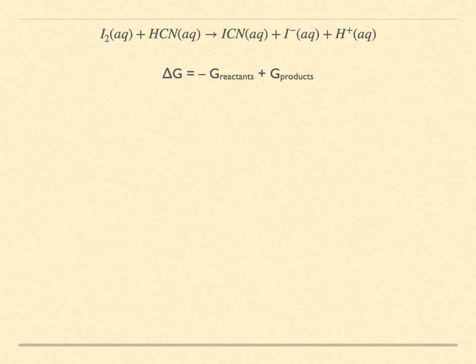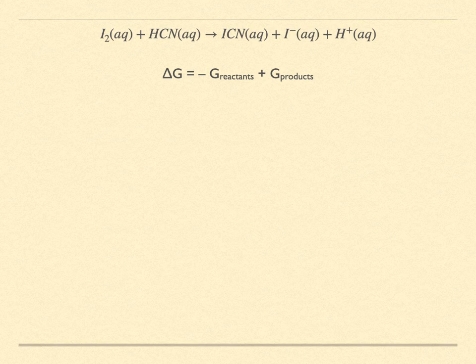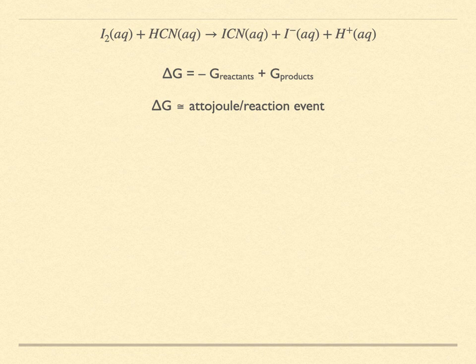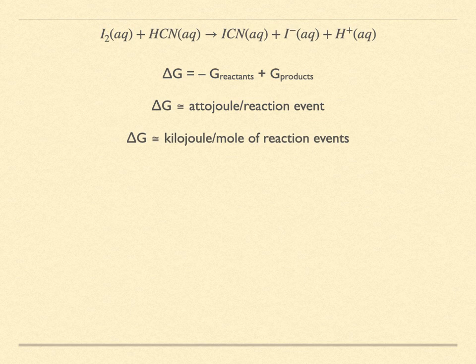If we restrict our conditions to constant temperature and pressure, then changes in chemical potential are just changes in Gibbs energy. When a reaction event occurs, there is a small change in Gibbs energy, delta G. For a single reaction event, this would be a very small number, probably measured in attojoules per event. On the other hand, if we consider a very large system, such that when a mole of reaction events occurs they do not substantially change the concentration, then we can think of the change in Gibbs energy when a mole of reaction events occur. We would report delta G in kilojoules per mole.